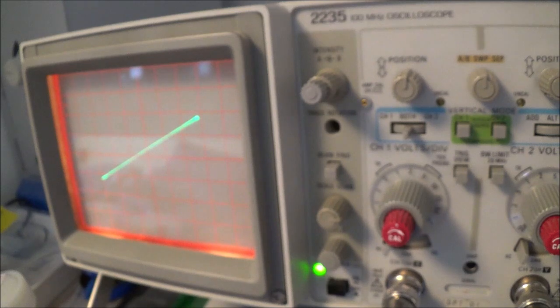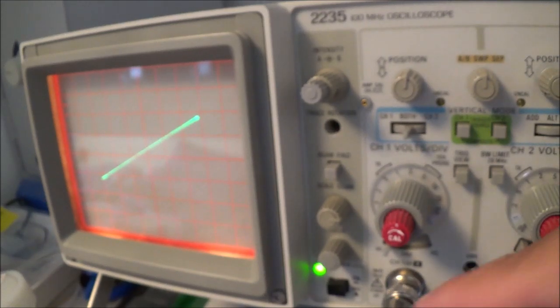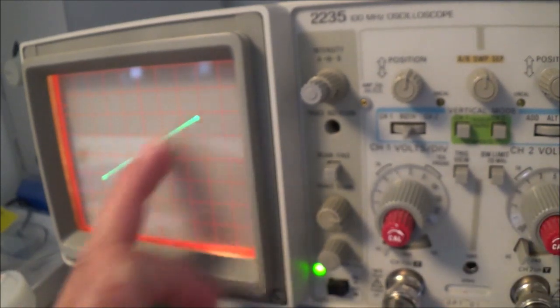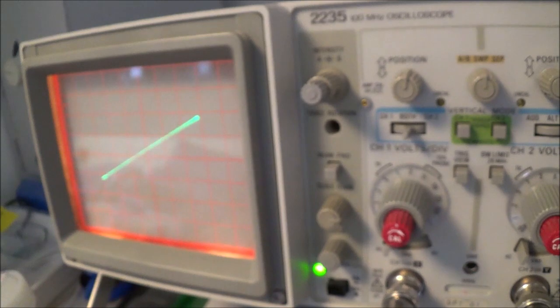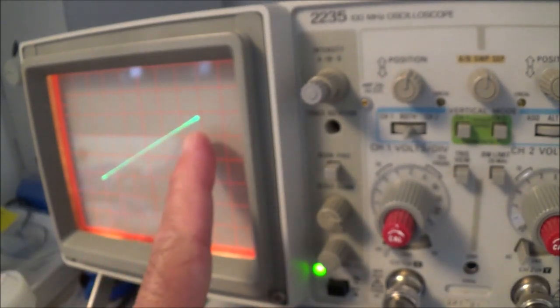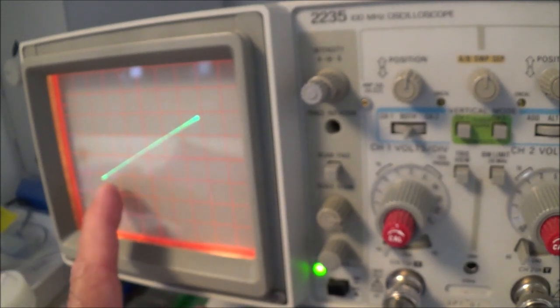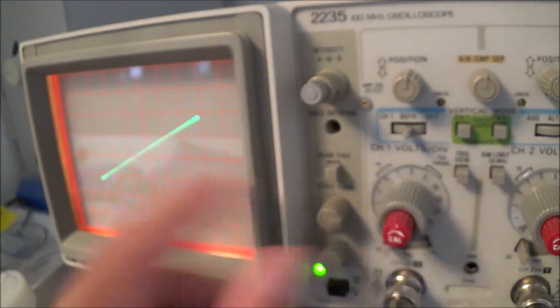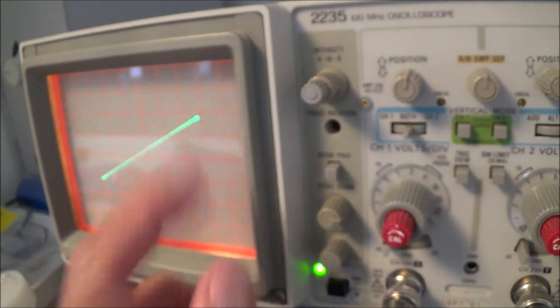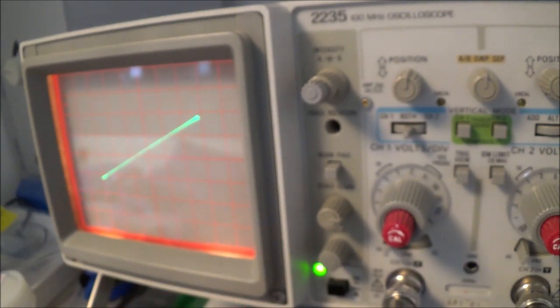Right now I'm feeding in a signal from an audio generator, a signal generator. It's a thousand hertz sine wave. And that's hooked up directly to the scope because I want to see which way the trace tilts when it's in phase. I know it's going to be in phase because I'm feeding the same output into the oscilloscope. I got it set up to where it's about at a 45 degree angle and it's slanted to the right.